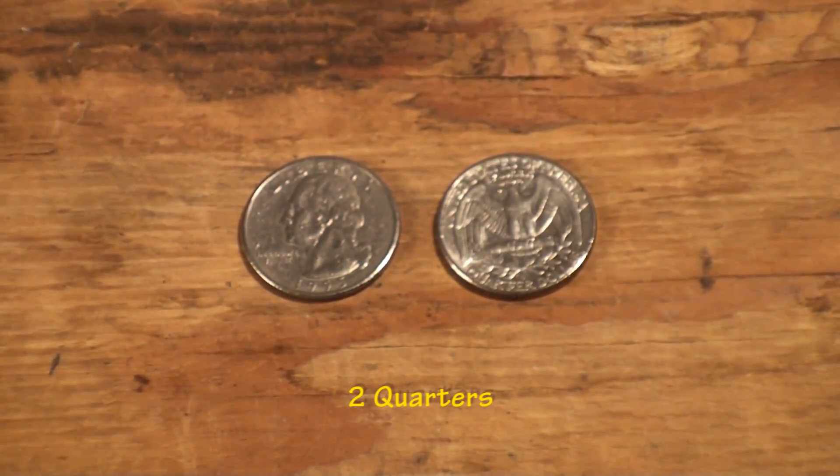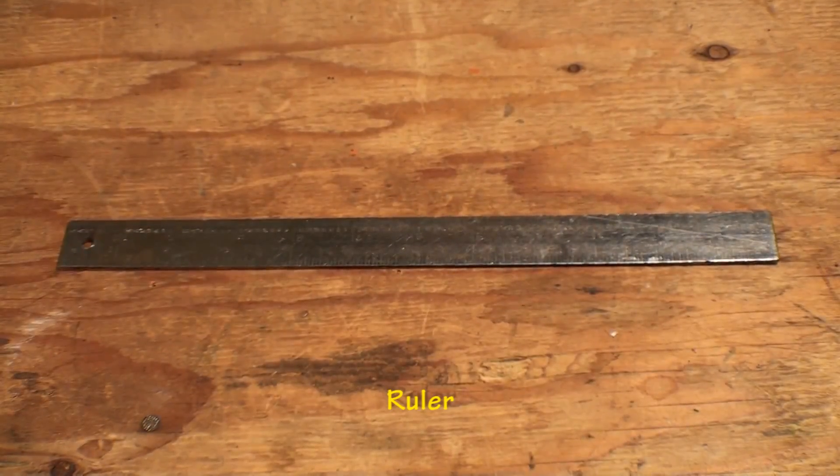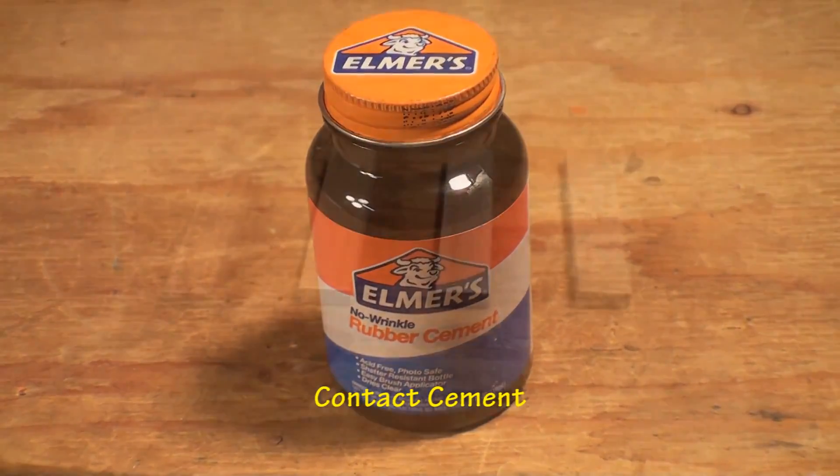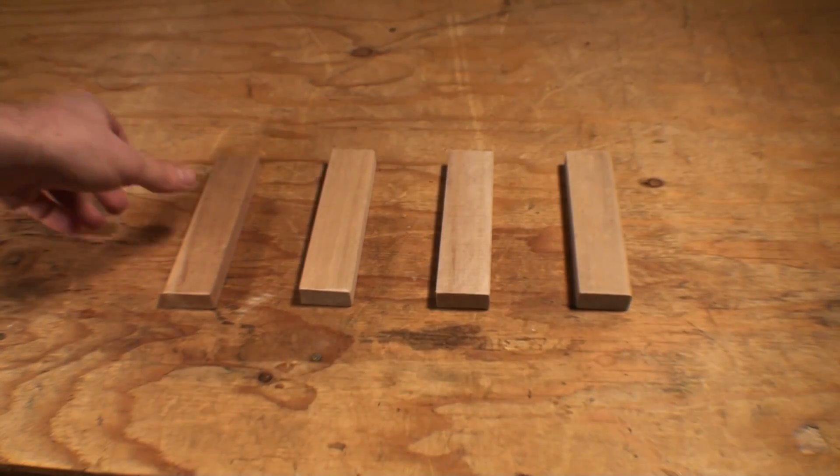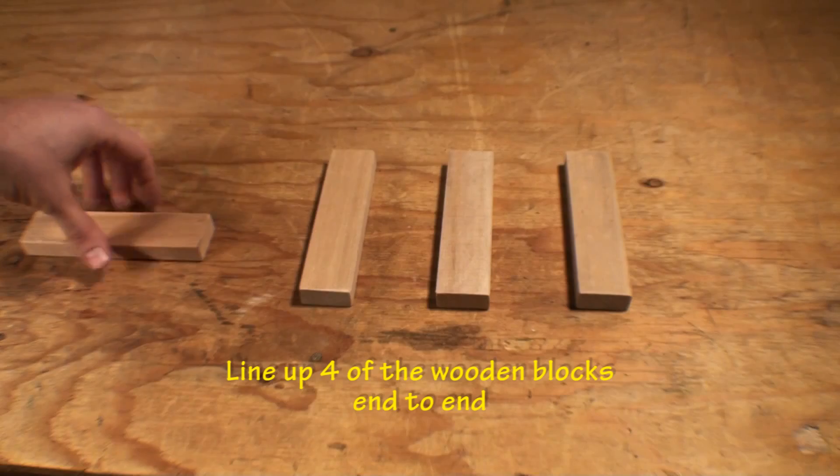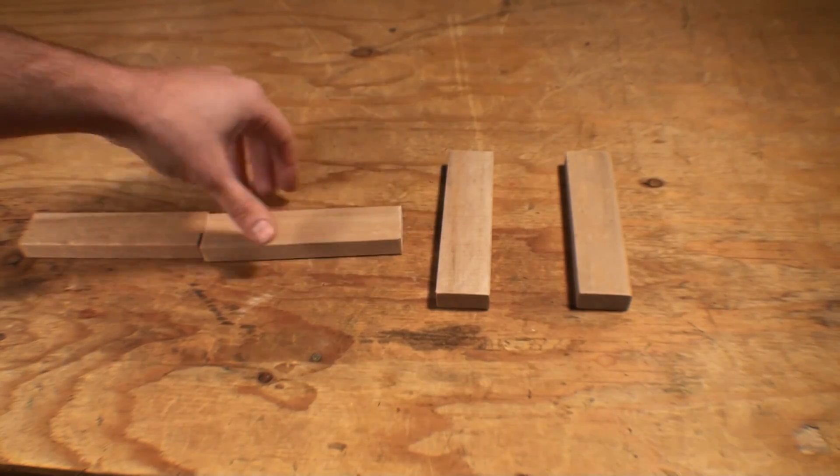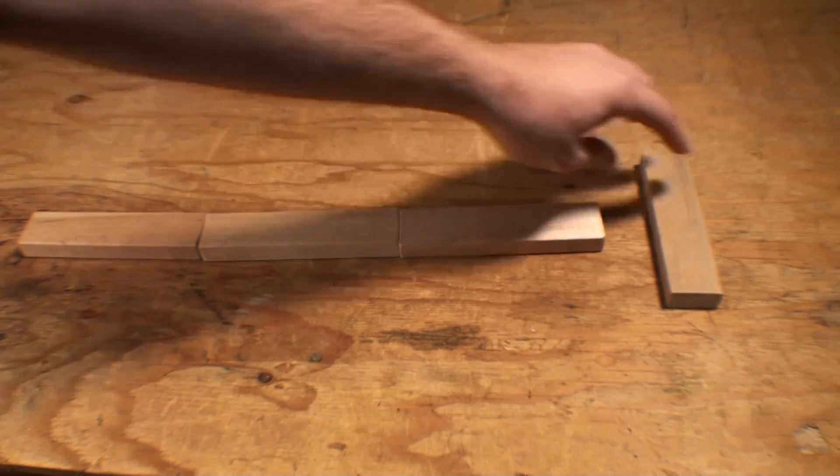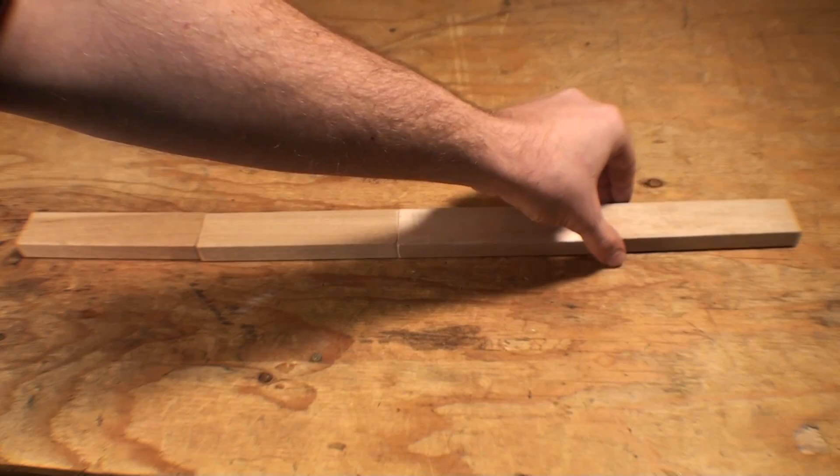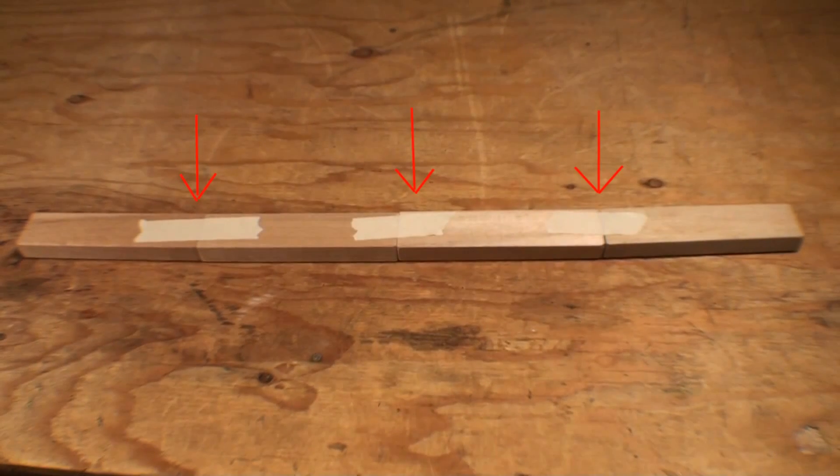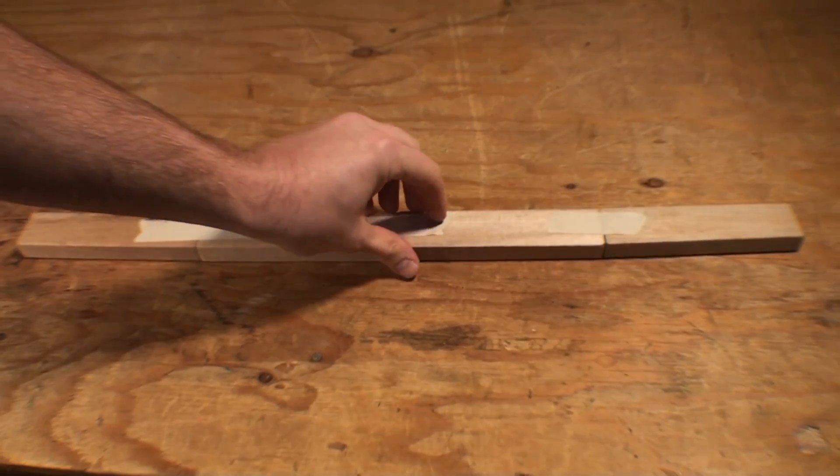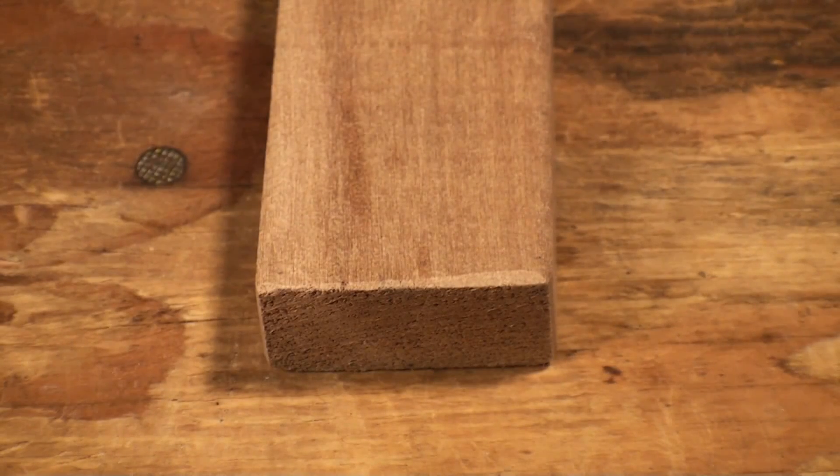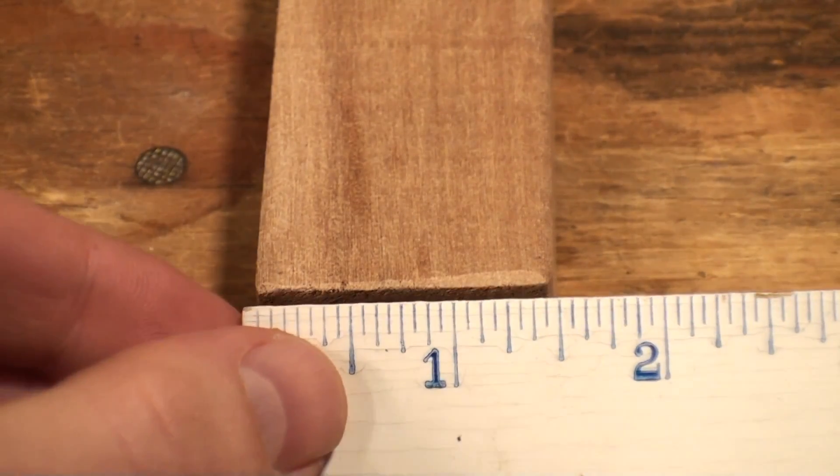will need are two quarters, a ruler, a pencil, masking tape, and contact cement. First, line up four of the wood blocks end to end. Place tape on the breaks between the blocks and turn the combined piece over. Mark two guidelines spaced five eighths